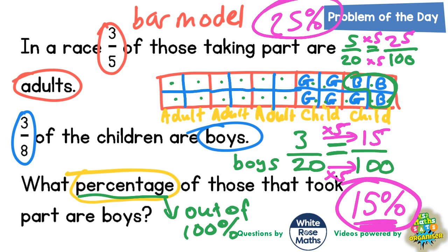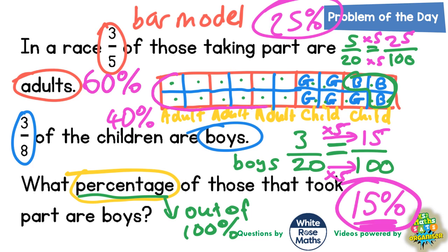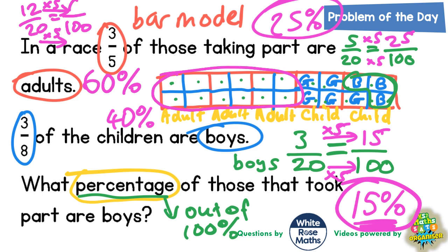And then from there you could work out the adult section. Well, if girls is 25% and boys is 15%, that makes 40% for children. Which means the rest must be adults, so 40% plus another 60% would be adults. And that makes sense because the adults are 12 of the 20 sections — 12 out of 20, multiply by 5 to get out of 100, 12 times 5 is 60, which is 60%.